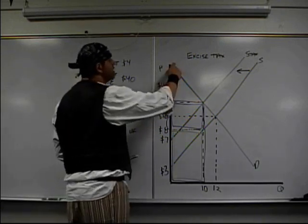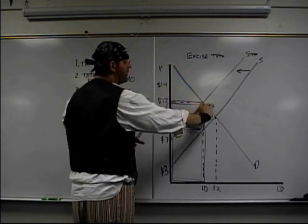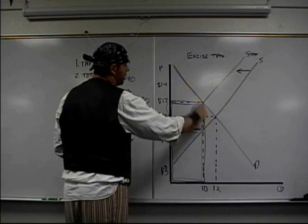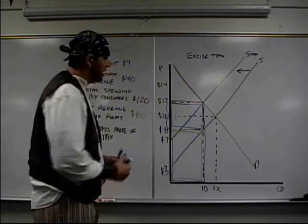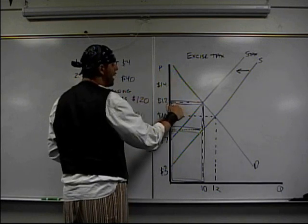Notice up here before consumer surplus, what people would have paid, what they did pay was ten. That's before the tax. It was right there, that big triangle from here, here, here. After the tax, it looks different. As you can see, they're willing to pay was here. They actually ended up paying twelve dollars.